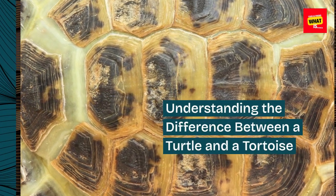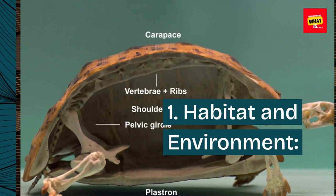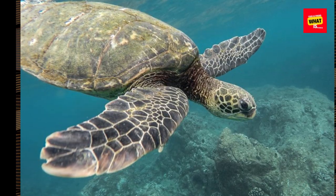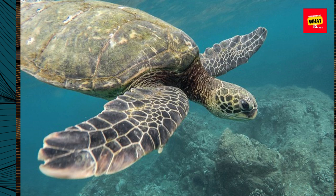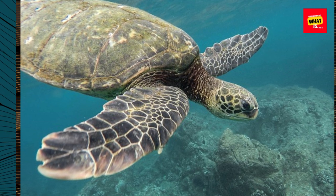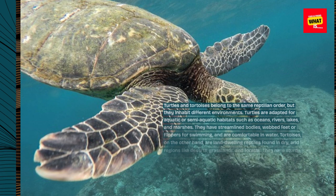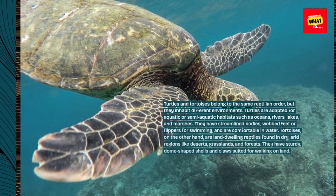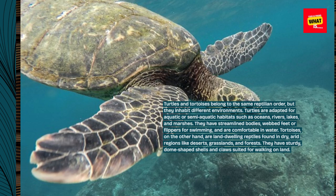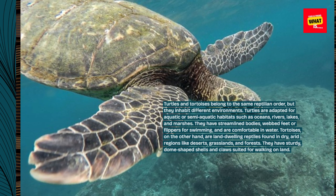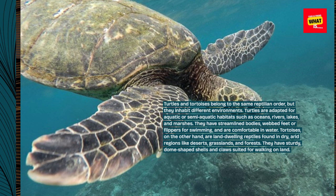Understanding the Difference Between a Turtle and a Tortoise. Habitat and Environment: Turtles and tortoises belong to the same reptilian order, but they inhabit different environments. Turtles are adapted for aquatic or semi-aquatic habitats such as oceans, rivers, lakes, and marshes. They have streamlined bodies, webbed feet or flippers for swimming, and are comfortable in water.